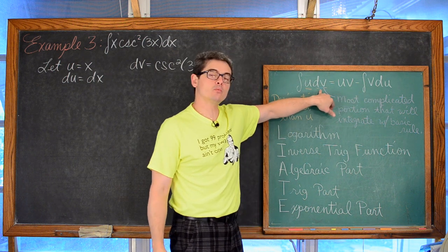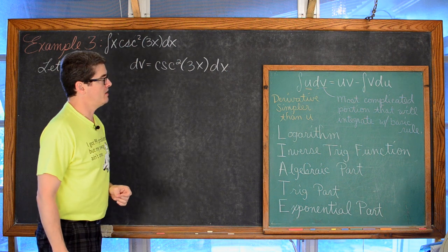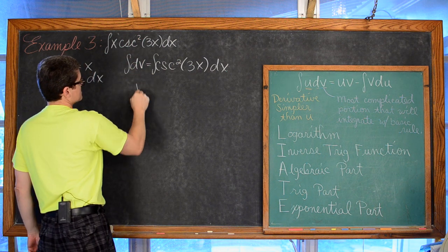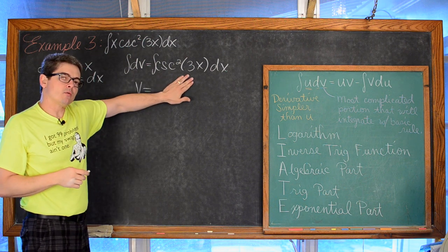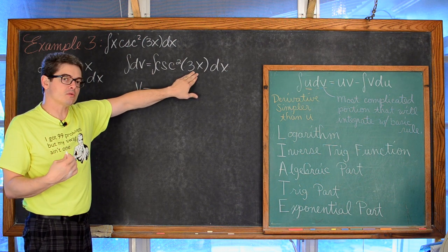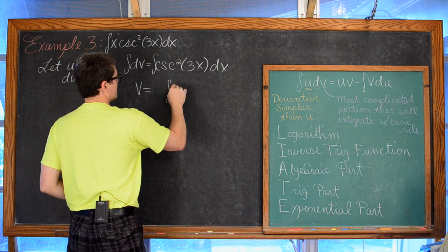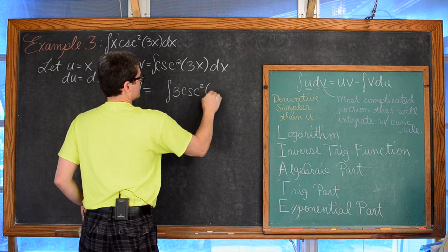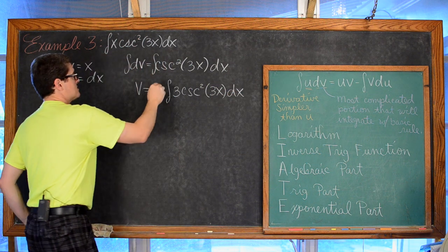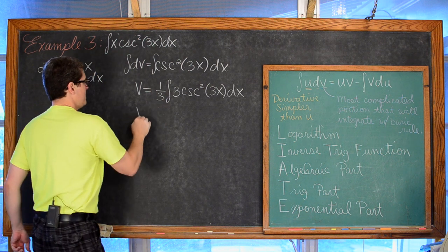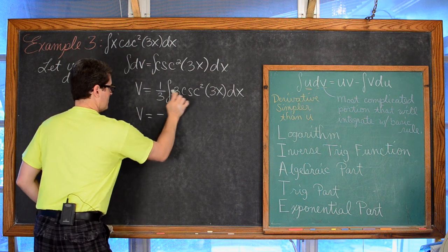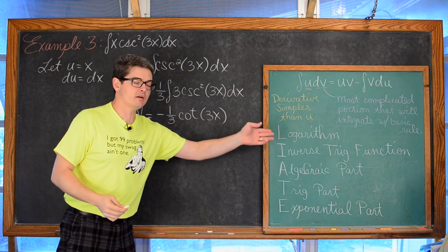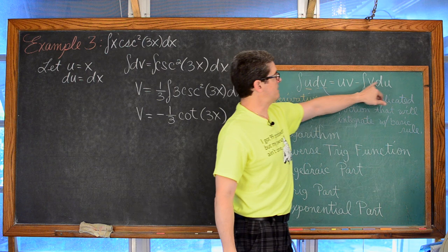To find v, we integrate both sides of dv = csc²(3x)dx. Using the chain rule — if 3x is our inner function then du is 3 dx — we introduce a multiplication of 3 and balance it with 1/3 out front. The integral of cosecant squared of 3x is negative cotangent, so v equals negative 1/3 cotangent of 3x. We save the plus c for the final answer.